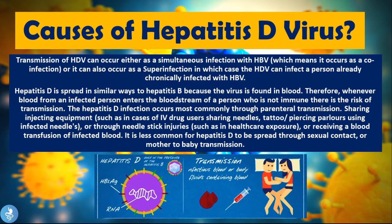Hepatitis D is spread in similar ways to hepatitis B because the virus is found in the blood. Whenever blood from an infected person enters the bloodstream of a non-immune person, there is a risk of transmission. The most common route is parenteral transmission — sharing injected equipment such as among IV drug users, tattoo or piercing parlors using infected needles, needle-stick injuries in healthcare settings, or receiving infected blood transfusions. Sexual contact and mother-to-baby transmission are less common but can occur.